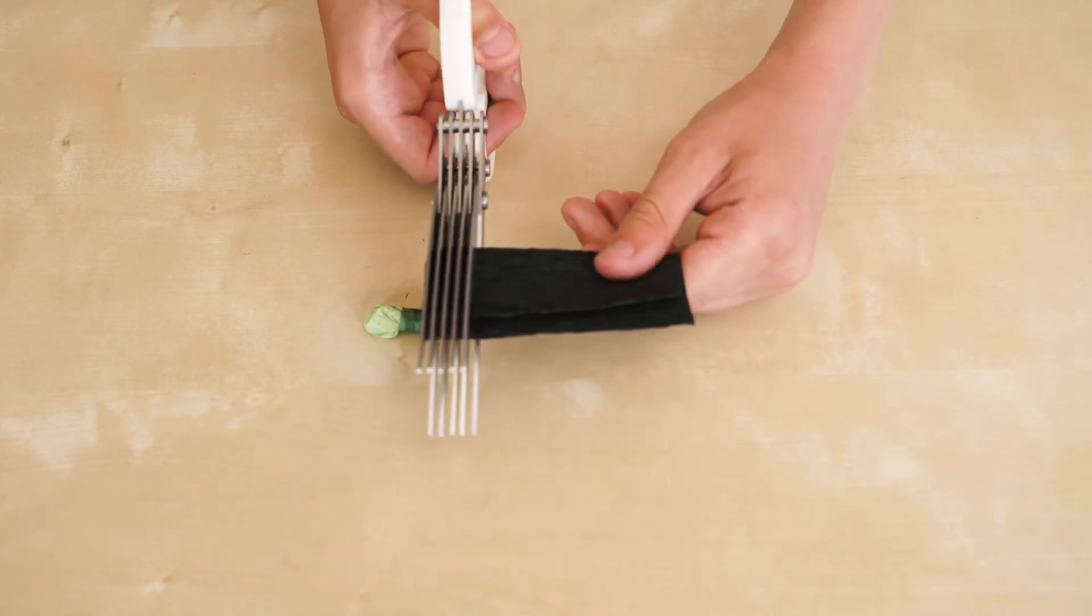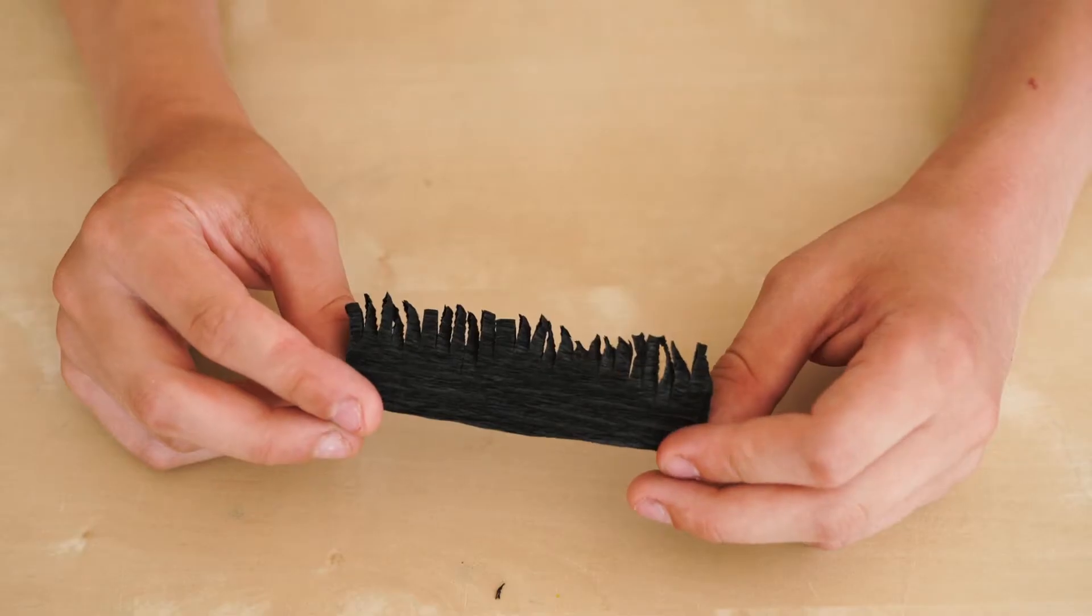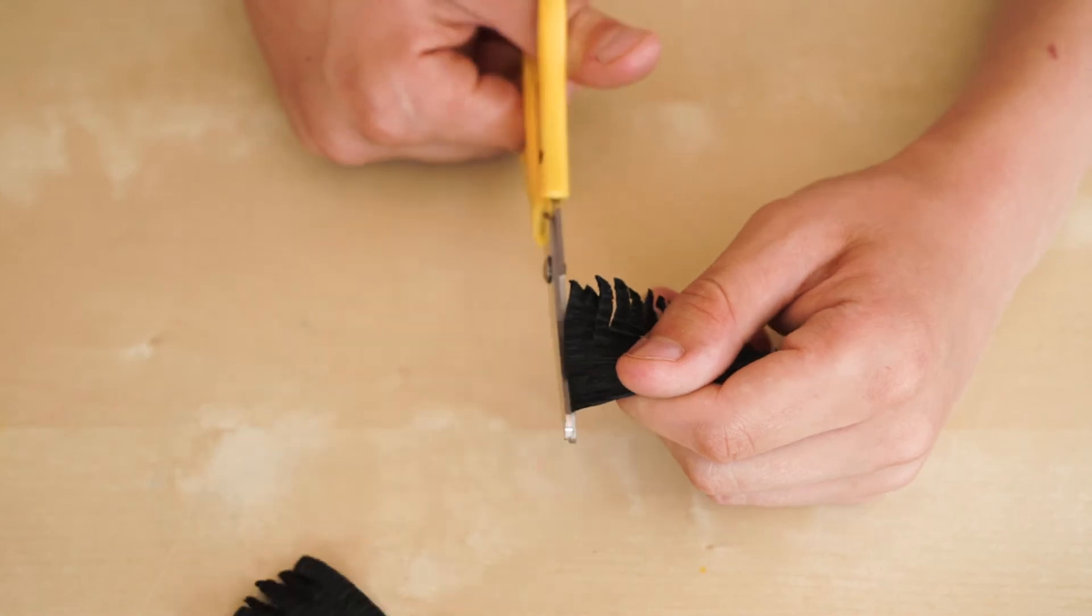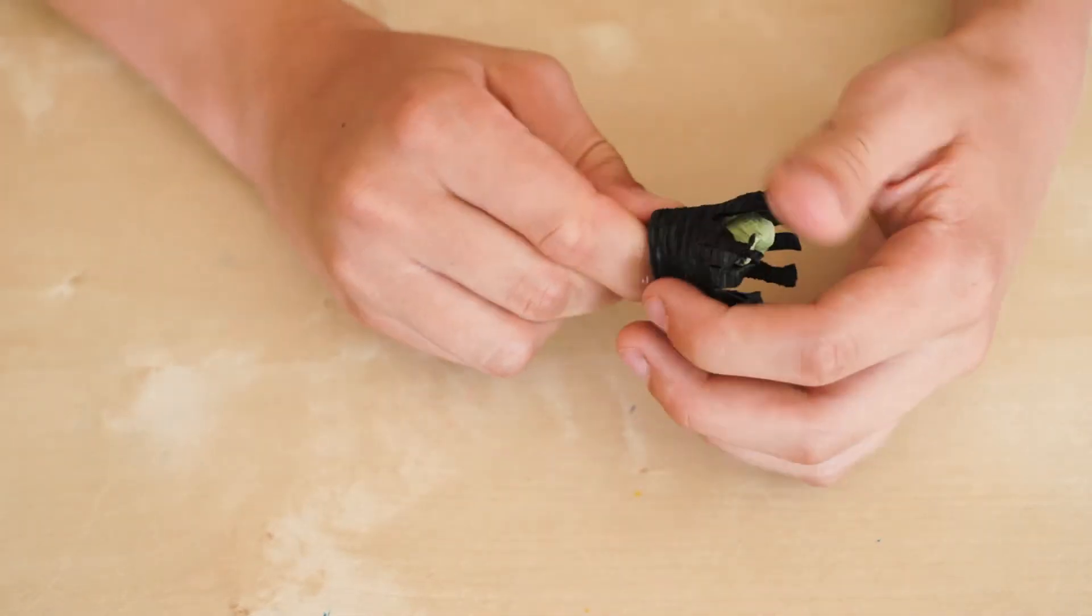If you want some stamen, cut up some black crepe paper using fringe scissors. Wrap it tightly around.